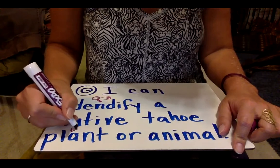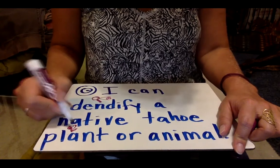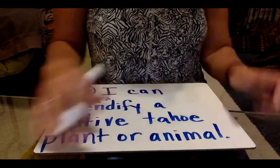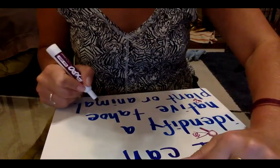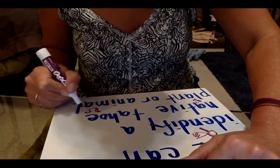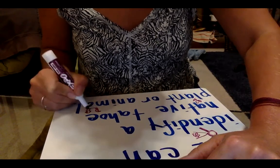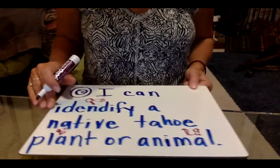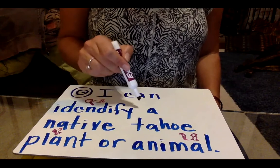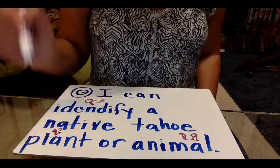For an animal, I'm going to draw a picture of a squirrel. Let me look at it first. Okay, that's a squirrel tail, it's a whole body, little feet — there's my squirrel. So I can identify — which just means to look, to find, to look closely — a native Tahoe plant or animal.